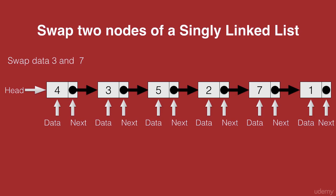So we want our linked list to look like this at the end. We want the node 7 to be in the place of 3 and the node 3 to be in the place of 7.